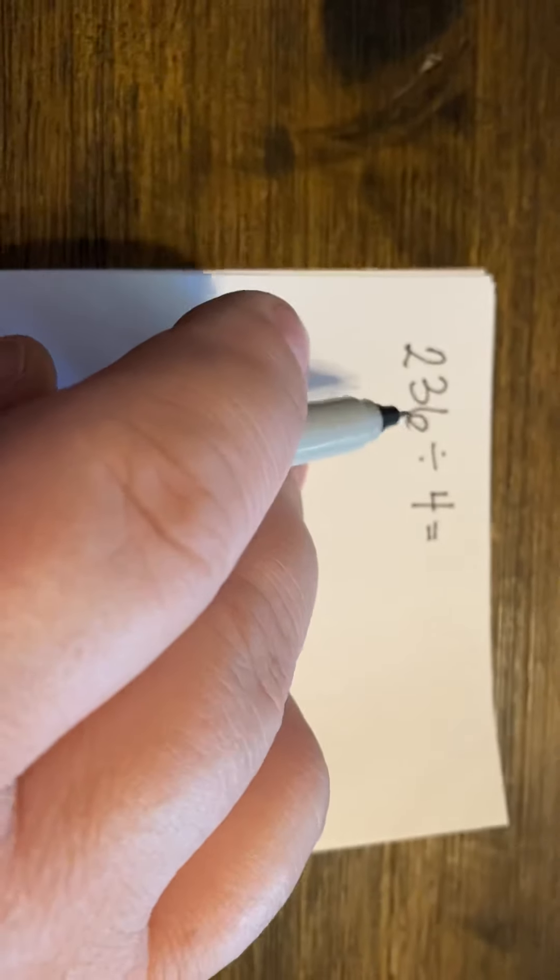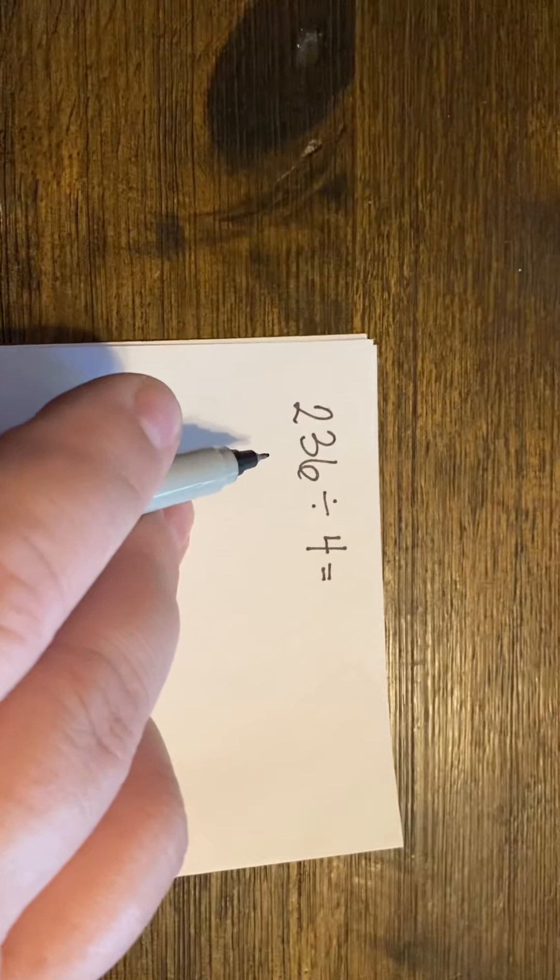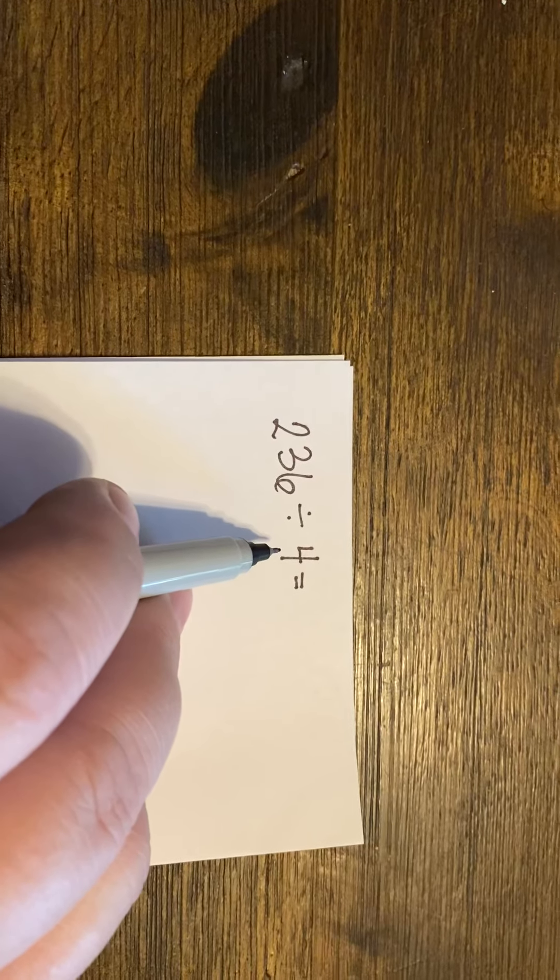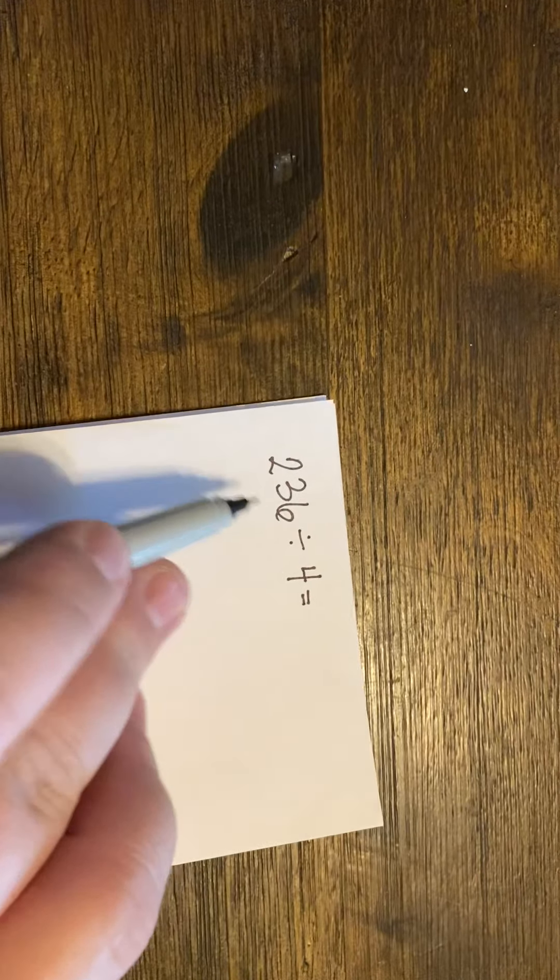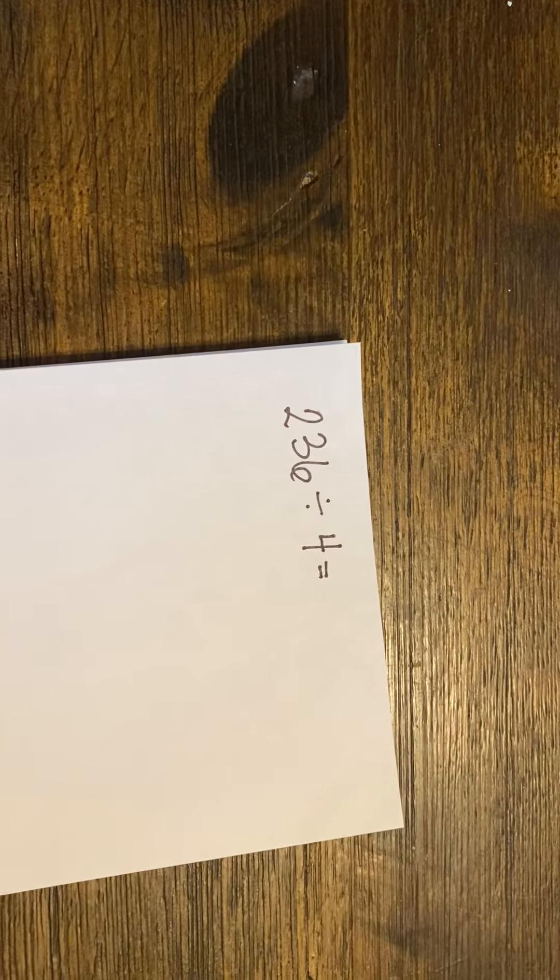We have our problem right here. It's 236, which is our dividend, divided by 4, which is our divisor. So what are we going to do? We need to think about what we know about 4.